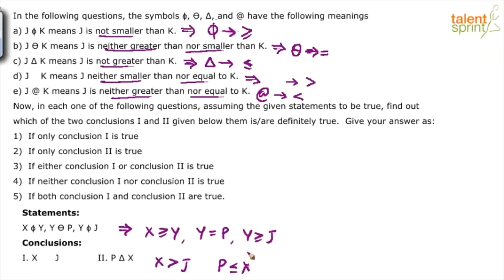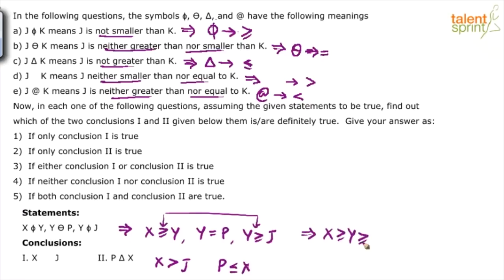Now look at the first conclusion: X greater than J. If you connect the first and the third statement, we know that X is greater than or equal to Y and Y is greater than or equal to J. So the answer should be X greater than or equal to J. But what is given here? Only X greater than J. So the first conclusion is wrong, because X is not just greater — X is greater or equal.